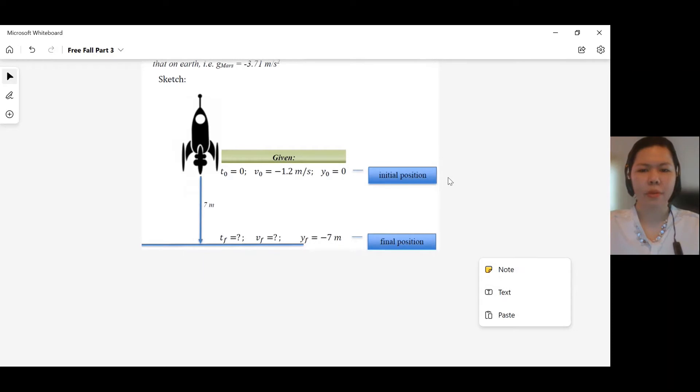For the initial position of the spacecraft, T0 equals 0, Y0 equals 0. That's the initial position. V0 equals negative 1.2 meters per second because the spacecraft is going down. And its final position, just before it touches the ground, is negative 7 meters.